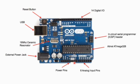Here you can see the external power jack. We connect a 5-volt adapter to this external power jack, through which the Arduino board gets its power. To power the Arduino board, we either connect a DC adapter (5 volt) directly, or we can also connect a battery using a battery clip.